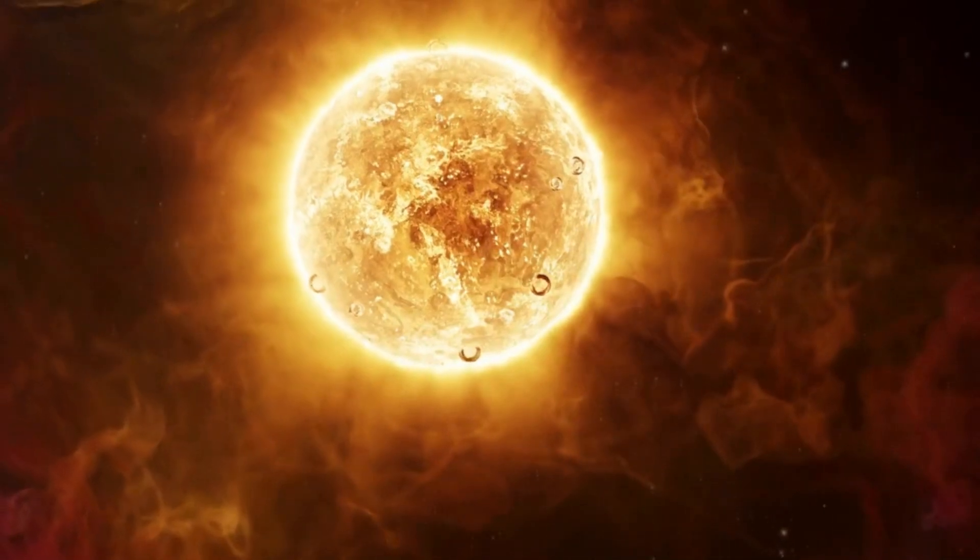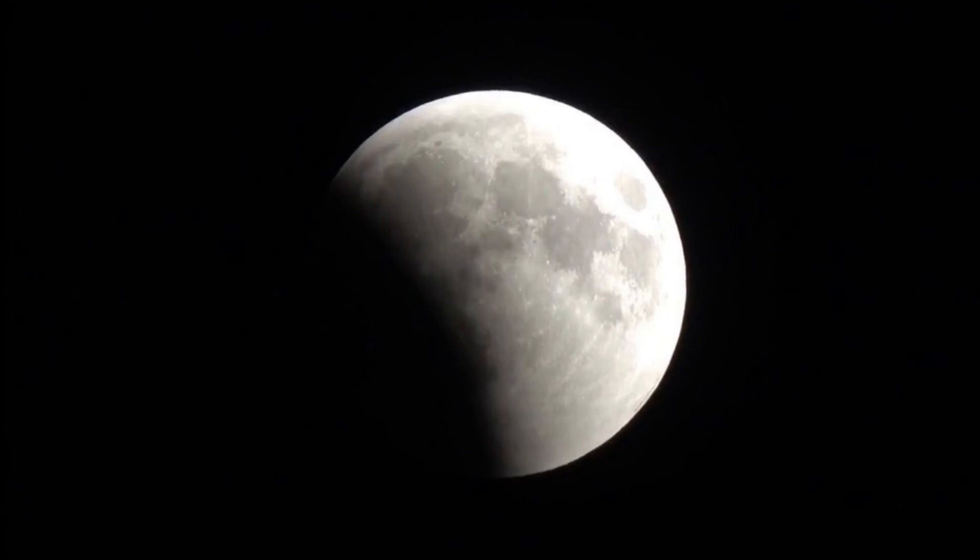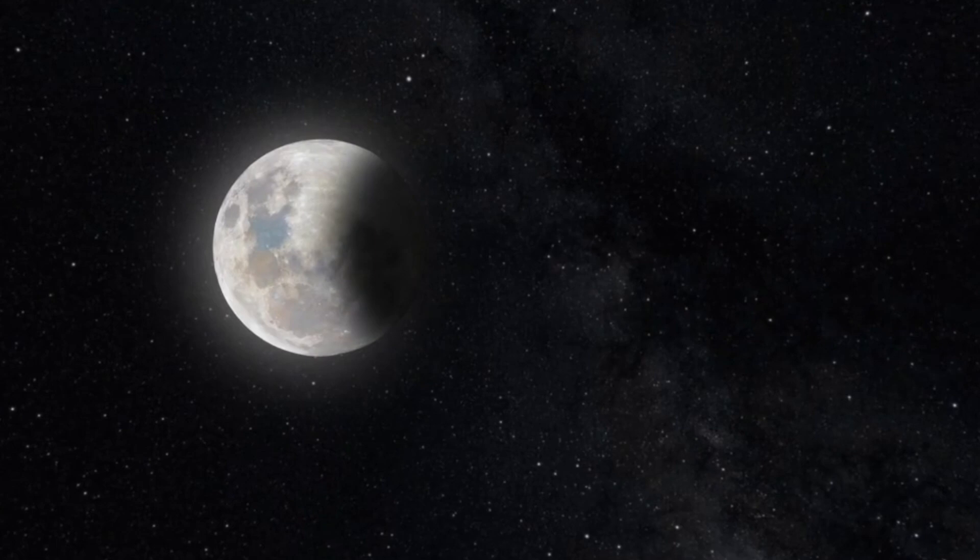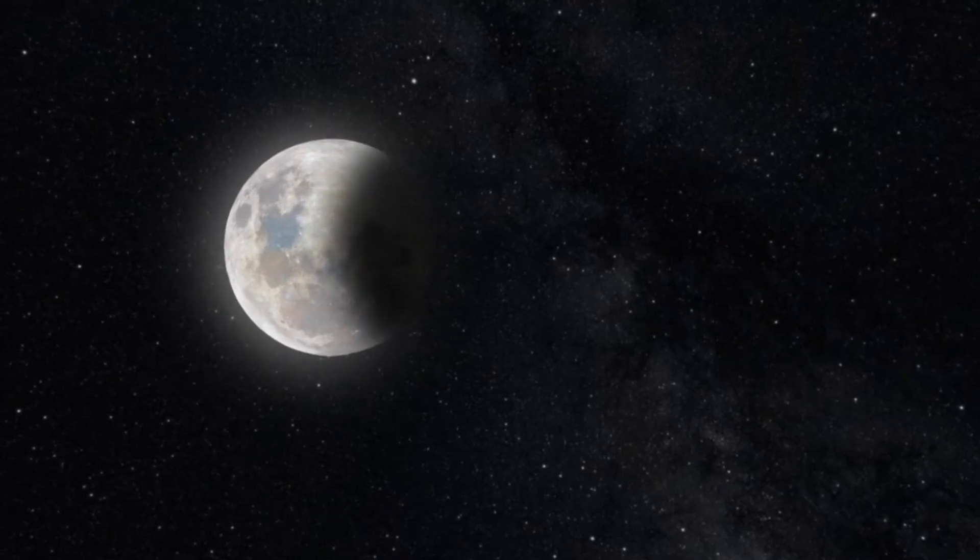Now, imagine standing beneath the path of totality during a total solar eclipse. As the moon's shadow races across the earth's surface, day turns to night in a matter of moments. Birds fall silent, stars emerge in the darkened sky, and the sun's corona, an ethereal halo of light, shimmers in the heavens above.